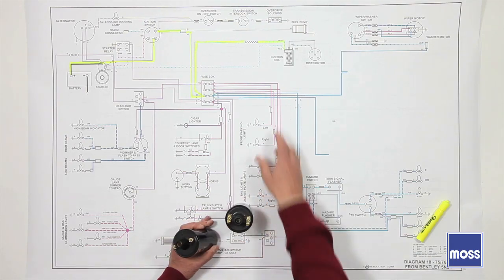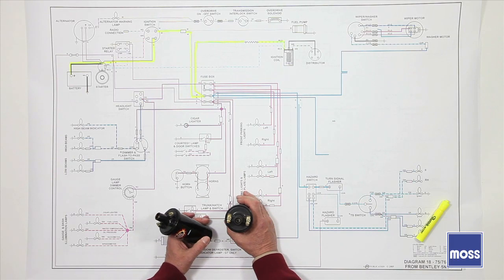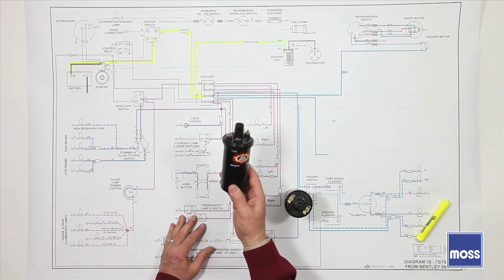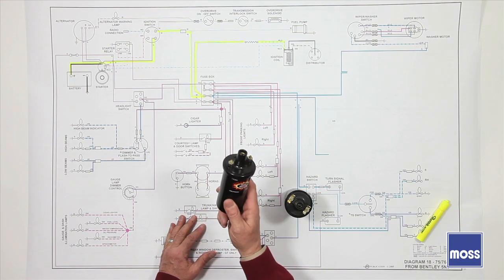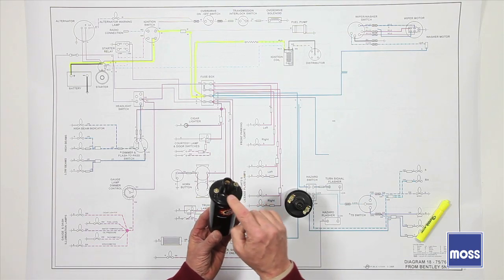We know that a ballast is merely a bit of resistance to slow down how much energy goes in there. We've heard the terms ballasted coils and non-ballasted coils. The name is misleading. This 1.5 ohm coil is a ballasted coil, but there's no ballast in here. What it means is that it operates in a ballasted system.